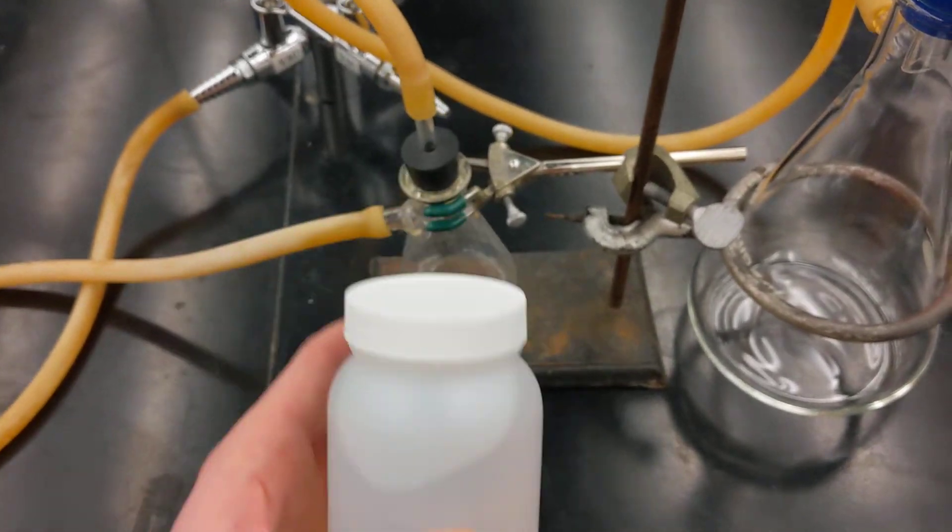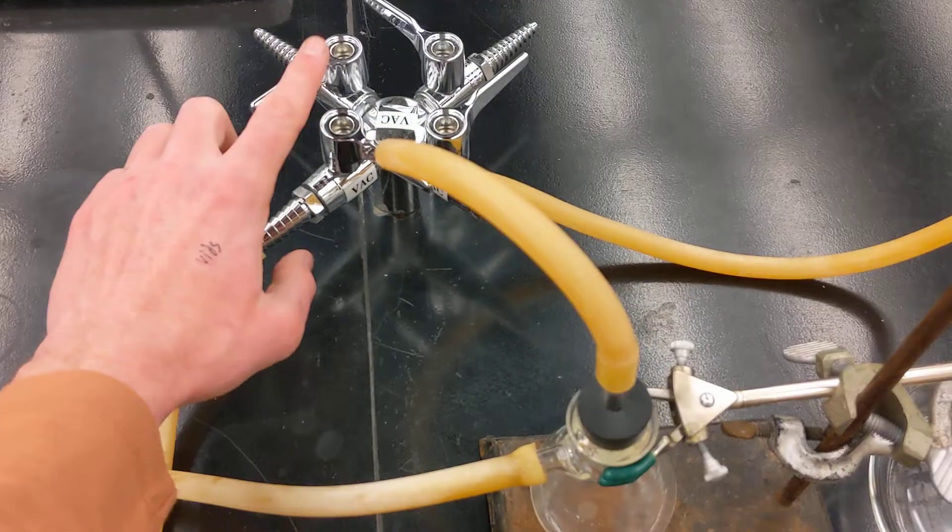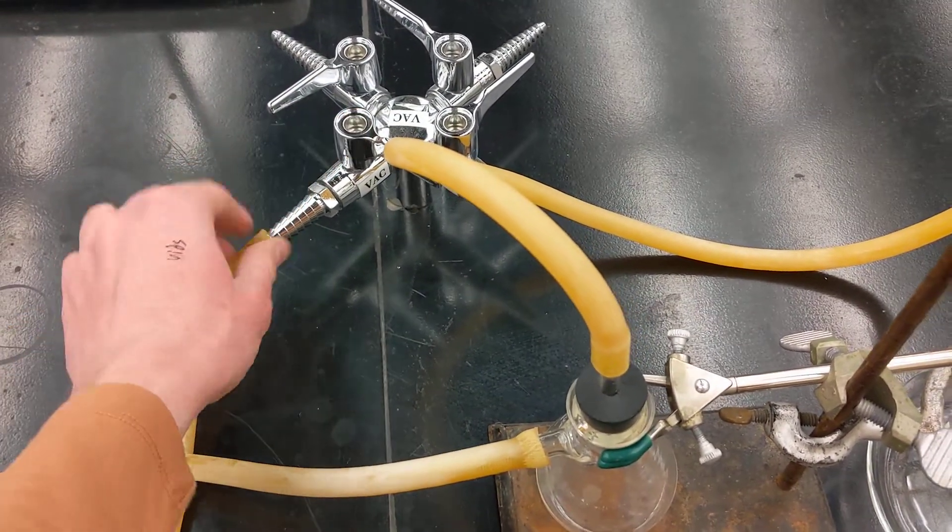This is a 250 ml bottle. You're going to use a setup that looks like this. This is a vacuum filtration setup. We're using the house vacuum here, but you could also use a portable pump.